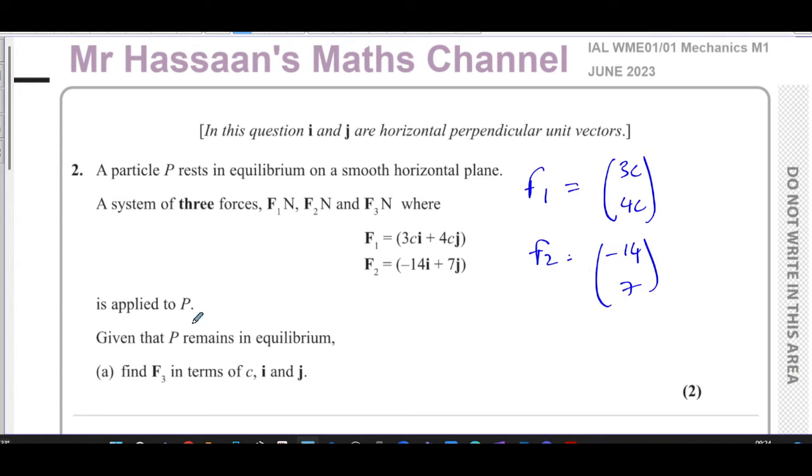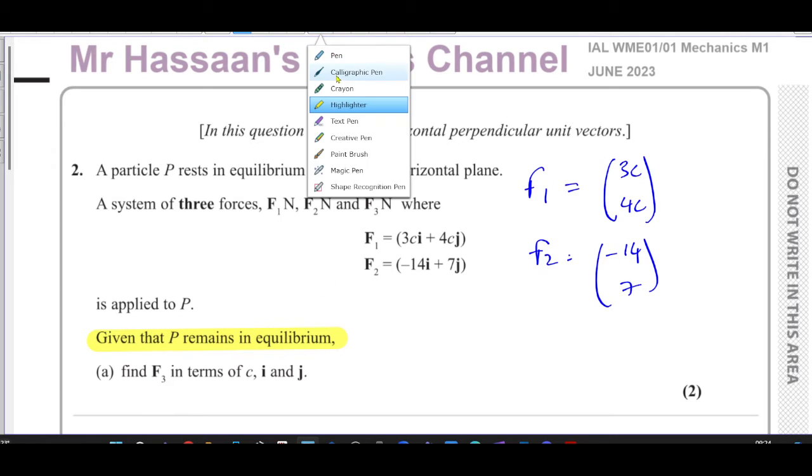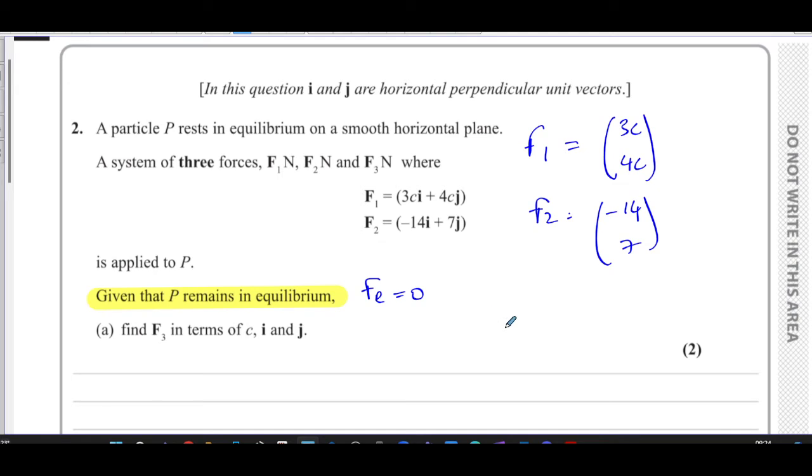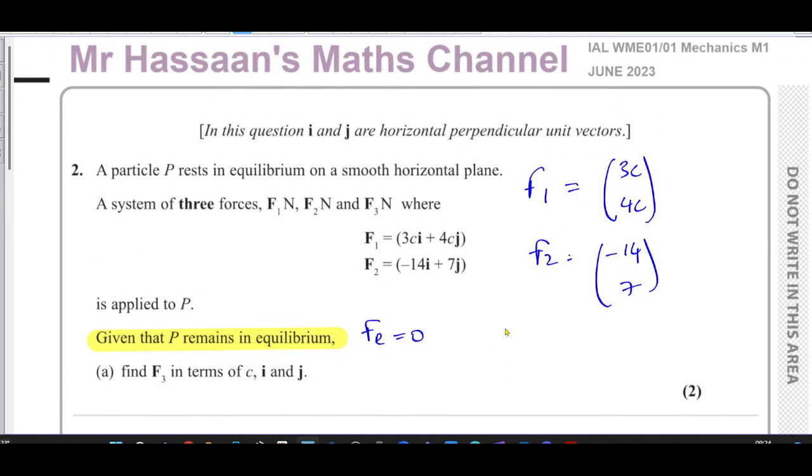F1, F2, and F3 are applied to this particle P. We know that P remains in equilibrium. That's important here. It remains in equilibrium, which means basically that the resultant force is equal to zero. Find F3 in terms of c, i, and j. So my answer is going to be in terms of c, i, and j. I'm going to keep them in column vector form for now.